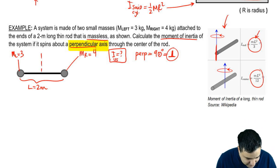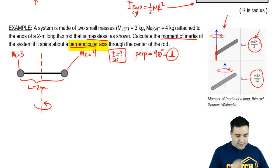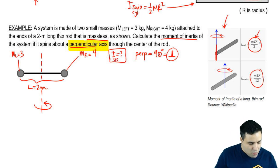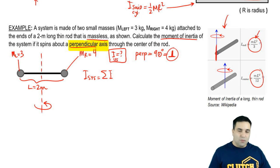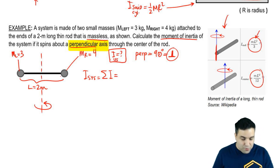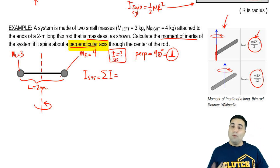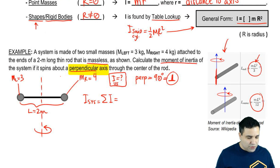So I'm going to draw it like this, and the idea is that this guy is spinning around itself like this. The moment of inertia of a system is the sum of the individual moments of inertia. So we have three objects, but the rod has no mass.